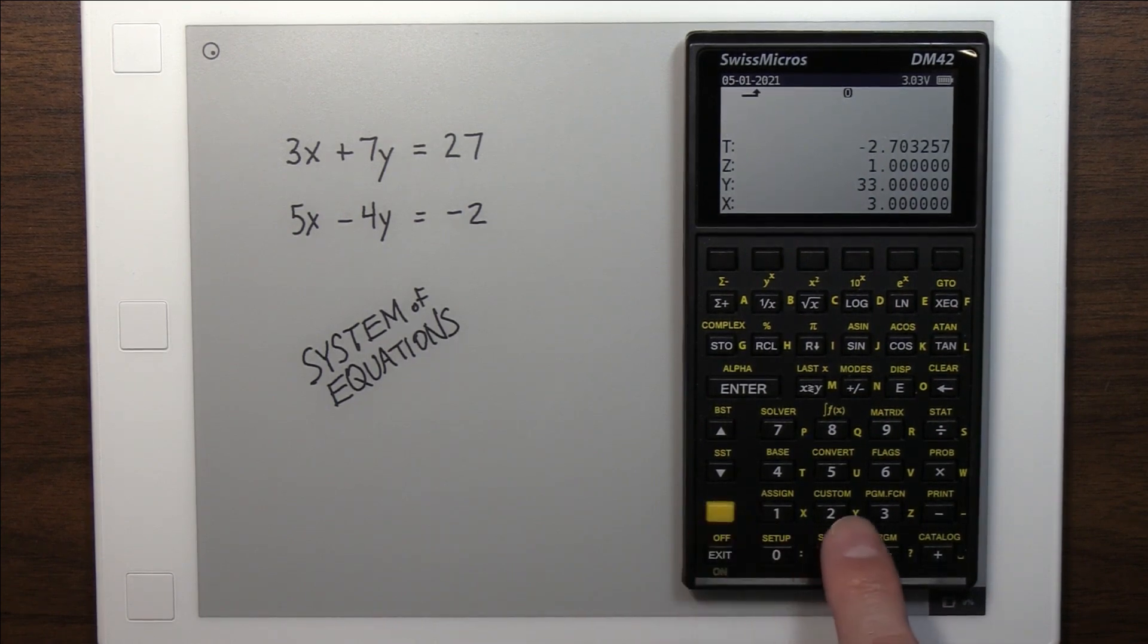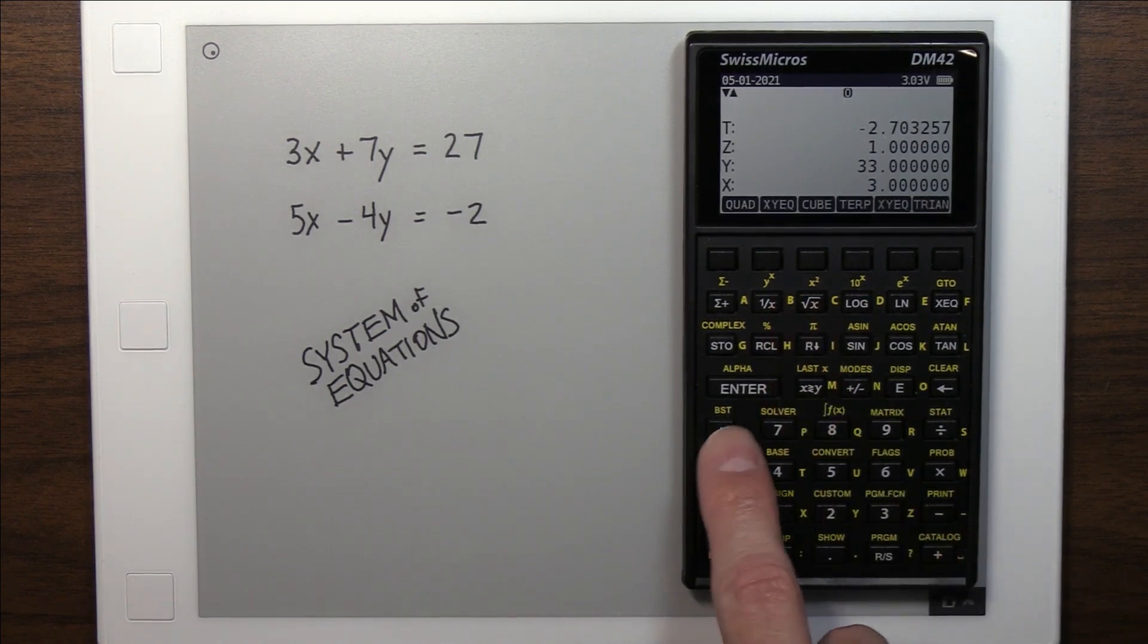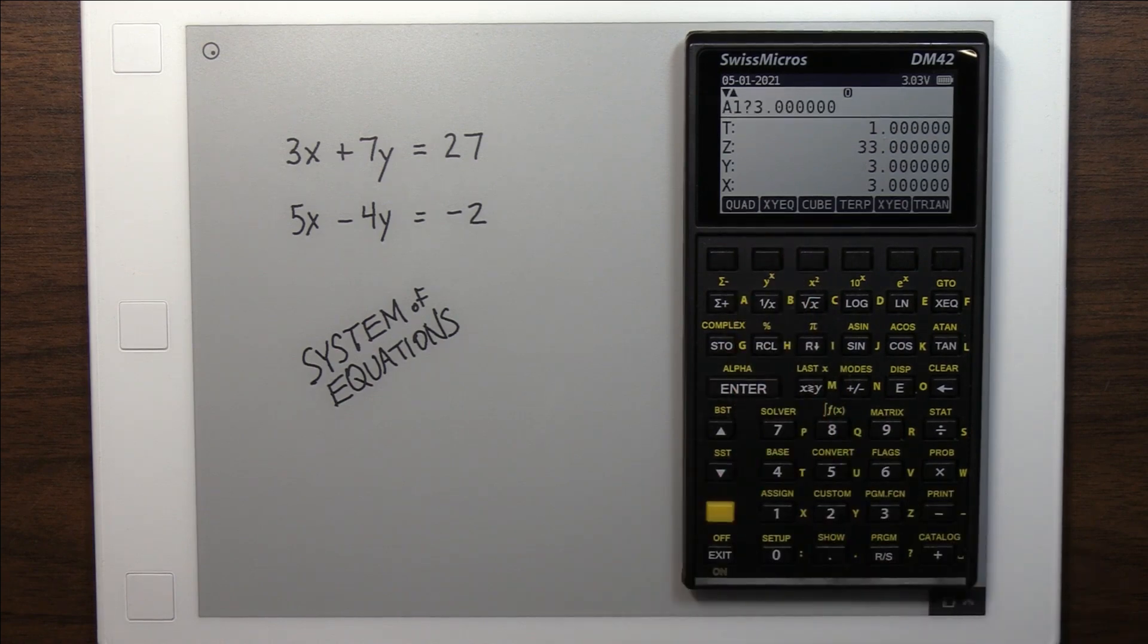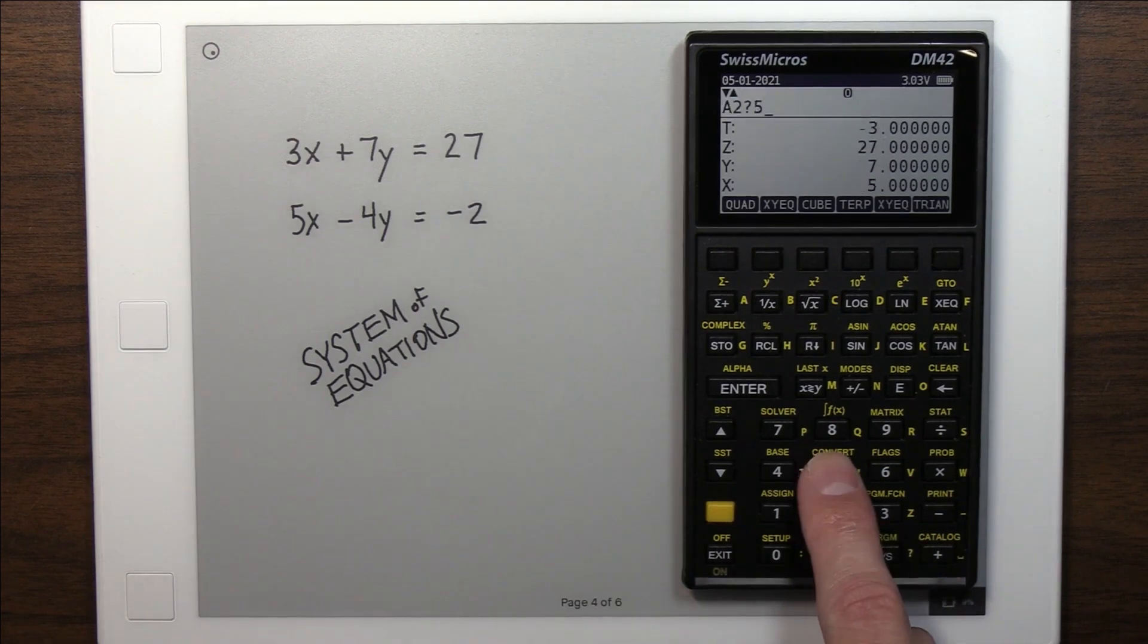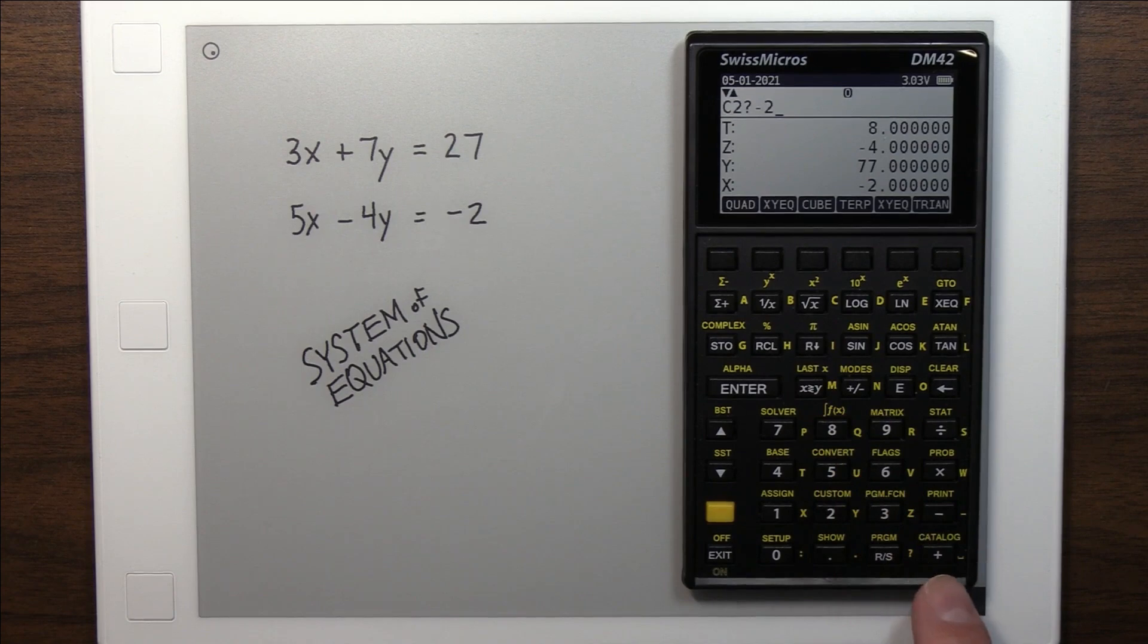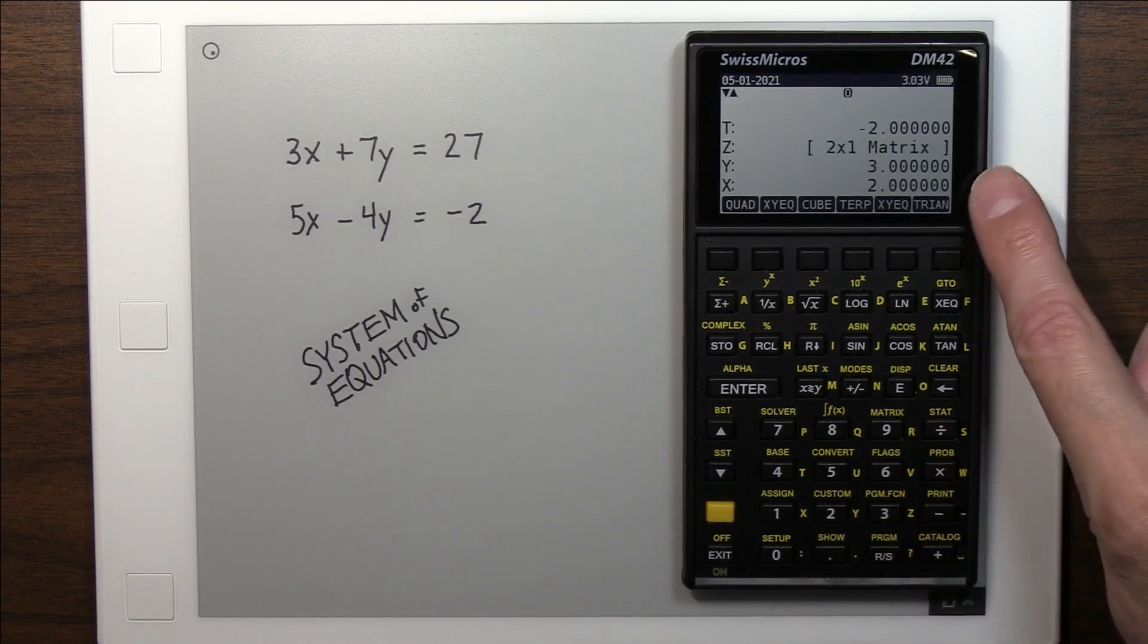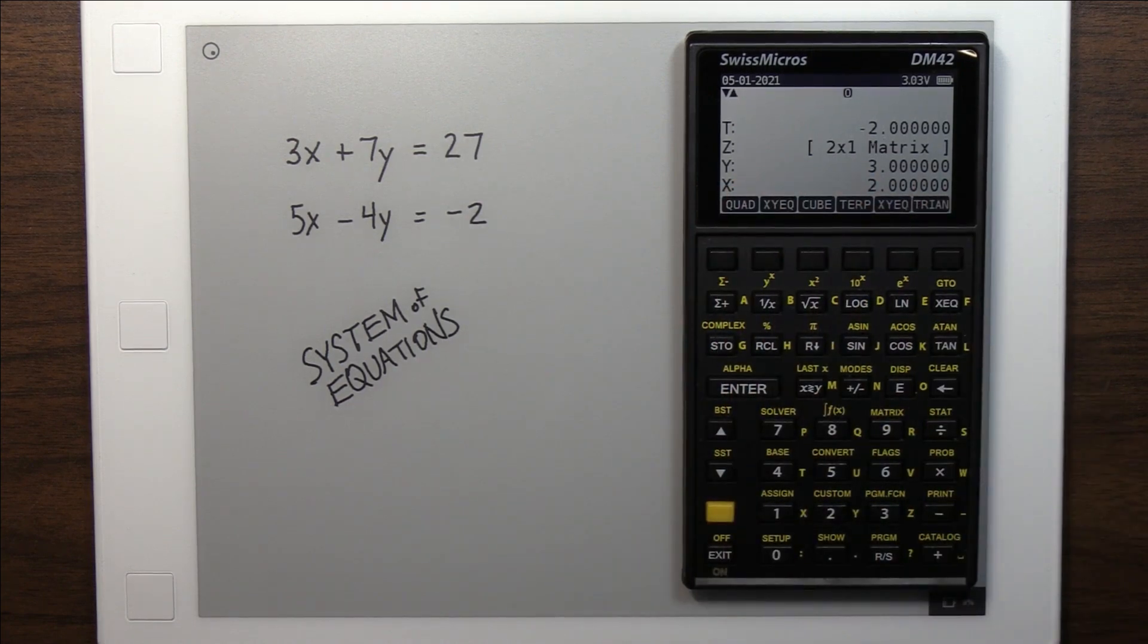So what I did is I wrote a little program that you can use to, oops, down here, XY equation. And it goes through and says, okay, what's my A1, 3, my B is 7, my C value is 27, 5, negative 4, and negative 2. And once you get that in there, it displays the answers. And it puts them, the x values on the x register and the y answer is on the y register. Way quicker. Or, you know, a lot fewer keystrokes. So I like that one.